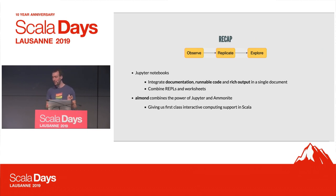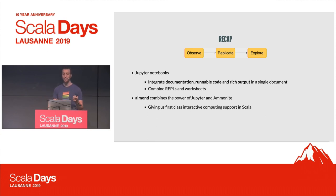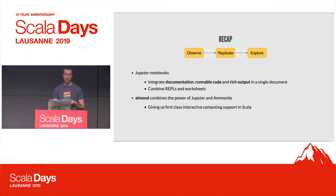To recap: we've seen that REPLs and worksheets are really great tools for exploration and rapid prototyping, but they don't really cover the other learning phases. And with Jupyter Notebooks, we get this integrated view — integrated documentation, runnable code, and also rich output in a single document, in a single view. That makes them a very powerful tool for teaching and interactive learning, but of course also for data science and data exploration. And Almond, by combining the power of Jupyter and Ammonite, brings that experience to Scala.